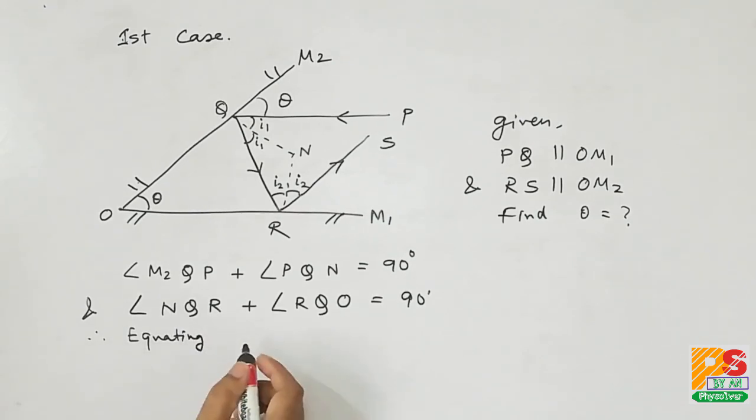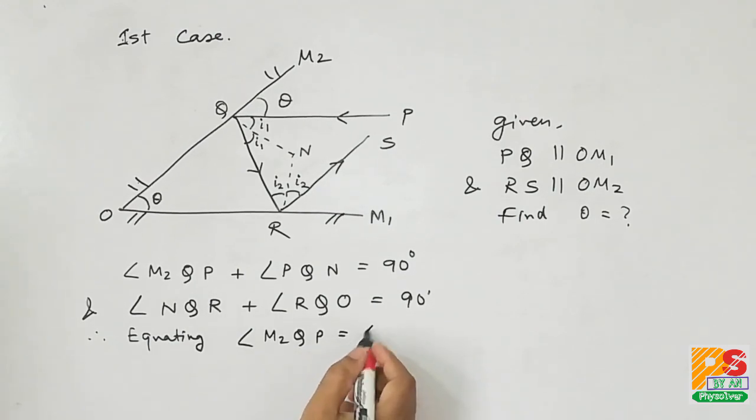Therefore equating, we will get M2QP is equal to angle RQO.